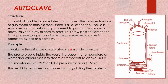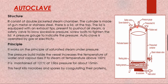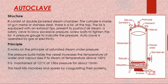Looking at the structure of the autoclave: it has a double-jacketed steam chamber. The cylinder is made of gunmetal or stainless steel. The lid covers the top and is equipped with an exhaust to release excess steam and a safety valve to blow out excessive pressure, screw bolts to tighten the lid, and a pressure gauge to indicate pressure. The autoclave is operated by gas or electricity. Its working principle is saturated steam under pressure.